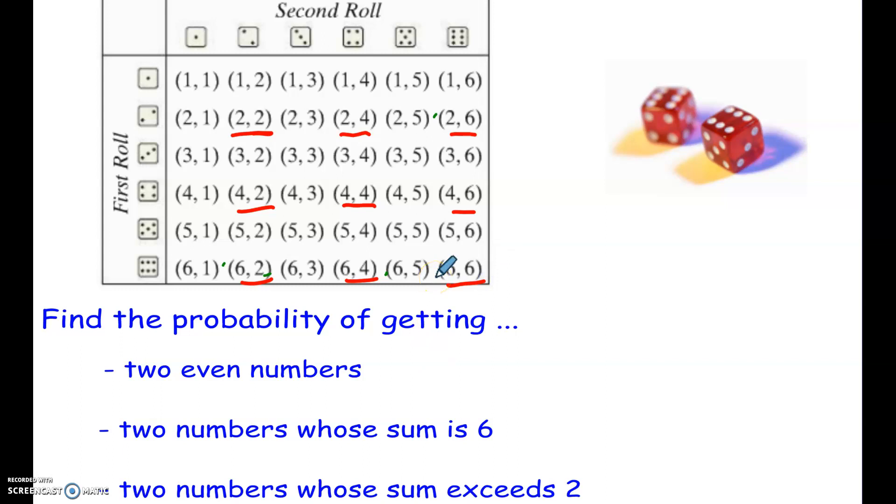So my probability here, there are nine of those. My probability is going to be 9 out of the 36. Well, if you can, you should reduce that. So that's going to be 1/4 is the probability.